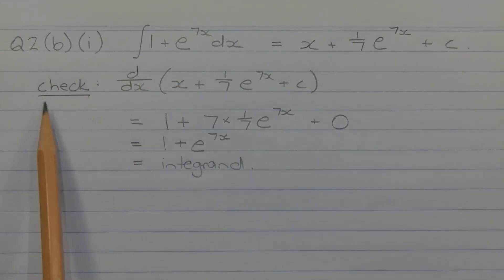One way to check our answer is to differentiate the primitive function that we just found. So the derivative of x plus 1 over 7 times e to the power of 7x plus the constant c is equal to 1 plus 7 times 1 over 7 times e to the power of 7x plus 0. And 7 times 1 over 7 is 1, so we end up with 1 plus e to the power of 7x, which equals the integrand that we started with.